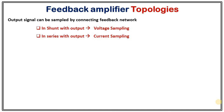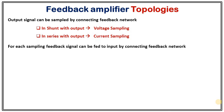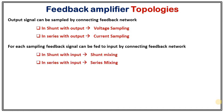It will be clear in a while why the shunt configuration is called voltage sampling and the series configuration is called current sampling. Once we have sampled the output signal, that sampled feedback signal can be fed to the input by connecting the feedback network again in two different configurations: in series with the input, which we call series mixing, and in shunt with the input, which we call shunt mixing.